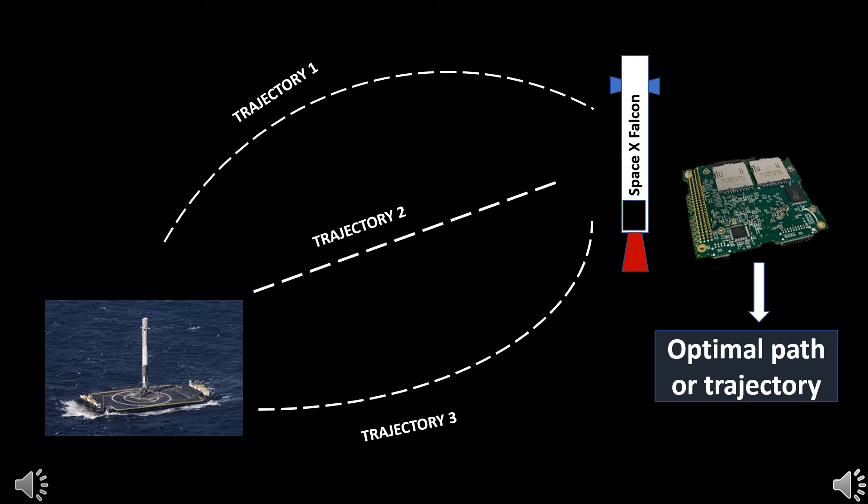There are many paths to reach the platform, but the algorithm determines the optimal path to land given the multiple constraints. The Falcon onboard computer processes the insane number of variables involved in the process and enables the Falcon to land safely.